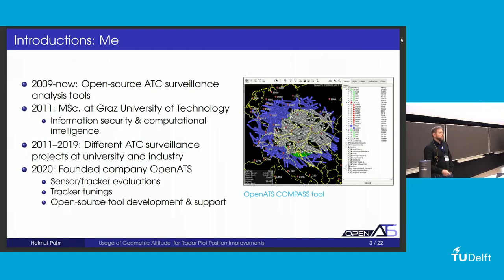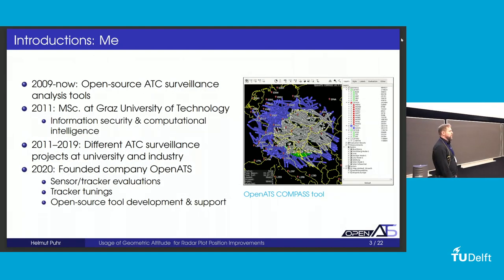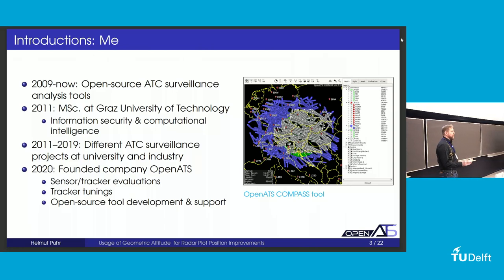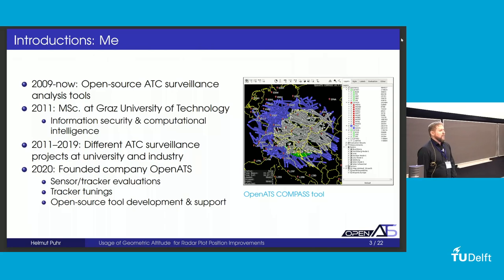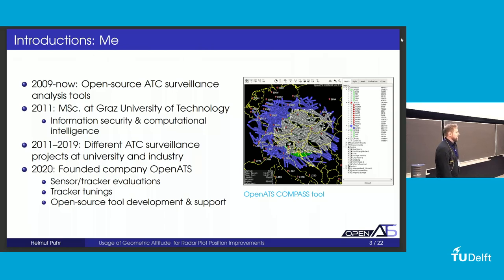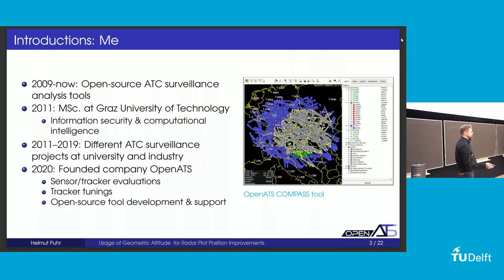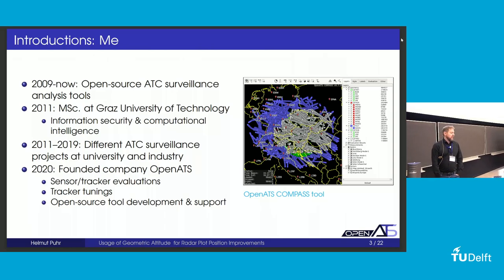A few words about myself. I've been working in the field of ATC surveillance for a bit more than 10 years, first at university, then at different companies. I started my own company about two years ago called OpenATS. The first word 'open' is not a coincidence — we mostly do open source tools, which we publish for free for anyone to use. We do sensor and tracker evaluations, tracker tunings, and tool development.